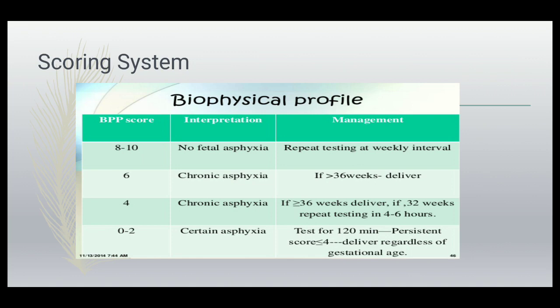Regarding the scoring system: a score of 8 to 10 indicates no hypoxia — repeat at weekly intervals. A score of 6 indicates chronic hypoxia — if more than 36 weeks, deliver the patient. A score of 4 also indicates chronic hypoxia — if more than 36 weeks, deliver; if around 32 weeks, repeat testing in 4 to 6 hours. A score of 0 to 2 indicates certain hypoxia — if the score remains less than 4 after 120 minutes of testing, deliver regardless of gestational age.